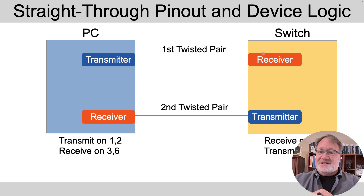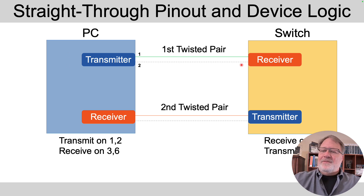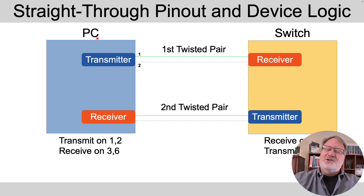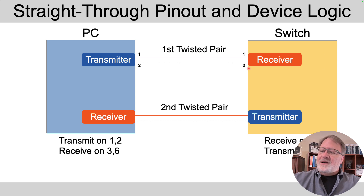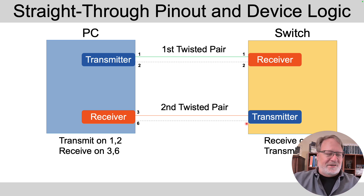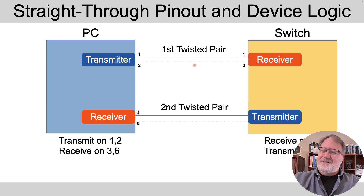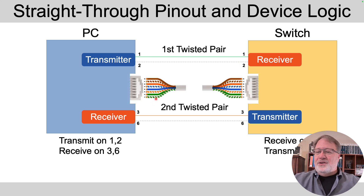Those are the numbered positions inside the RJ45 connector. With the original 10 and 100 megabit per second Ethernet, the transmitter connects to the receiver using the pair at pins 1 and 2 on the left. The switch, knowing the PC uses pins 1 and 2, connects its receiver to pins 1 and 2 on its end. Likewise, the switch transmits on the pair at pins 3 and 6, connecting to the PC's receiver. That's a straight-through pinout — wire at pin 1 connects to pin 1 on the other end, 2 to 2, 3 to 3, 6 to 6.